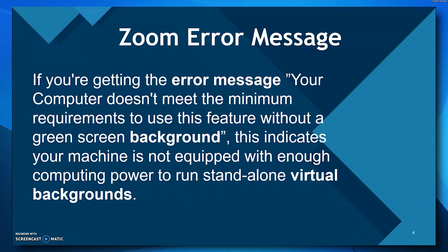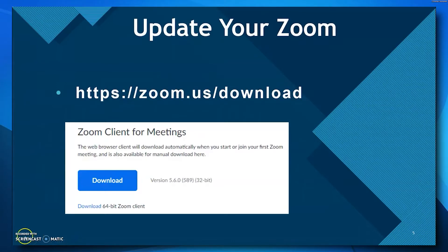You might need to simply update your Zoom version or your Windows or Mac operating systems. Updating your Zoom version is actually pretty easy. All you have to do is go to zoom.us/download and look for Zoom Client for Meetings. Just click on the blue download button and in about 15 to 20 seconds, the free download will be complete and you'll be good to go until the next update is announced.